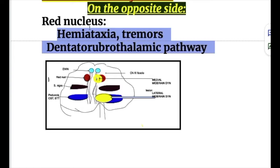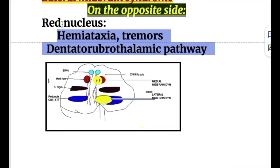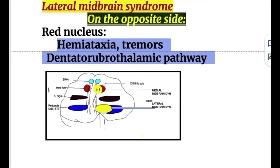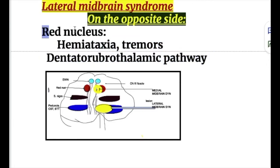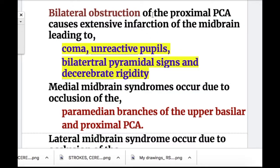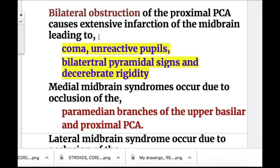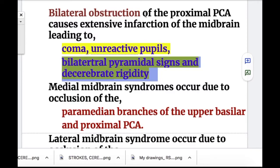Both medial and lateral midbrain syndromes cause ipsilateral damage to fascicles of the third cranial nerve. On the opposite side, the medial midbrain syndrome involves the corticospinal and corticobulbar tract causing hemiparesis and hemiplegia, while the lateral midbrain syndrome involves the red nucleus causing hemiataxia and tremors. Bilateral obstruction of the proximal posterior cerebral artery causes extensive midbrain infarction leading to coma, unreactive pupils, bilateral pyramidal signs, and decerebrate rigidity.